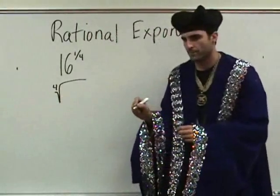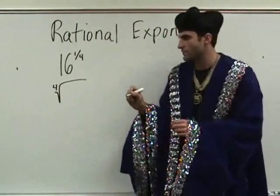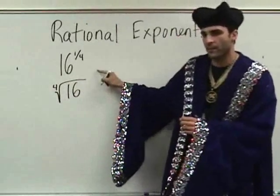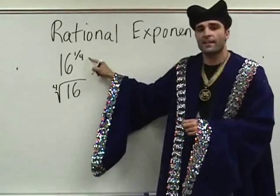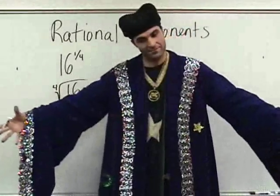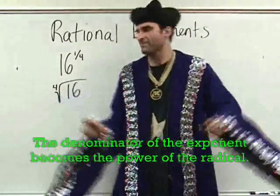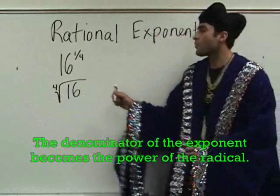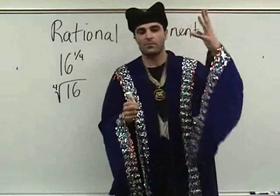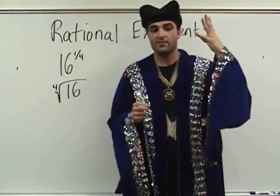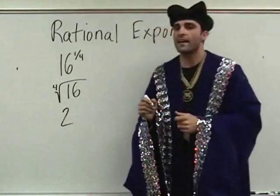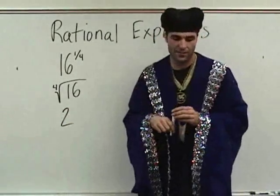And the one remains outside, so we don't need to write the one. So the denominator of the exponent becomes the power of the root. What is the fourth root of 16 — meaning what times what times what times what is 16? Two. Congratulations. That is the idea behind exponents that are fractions.